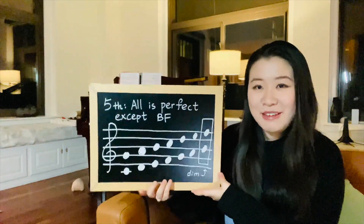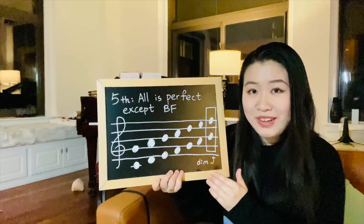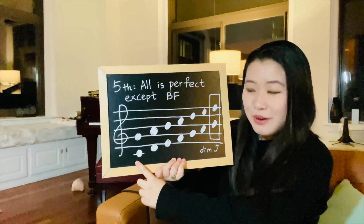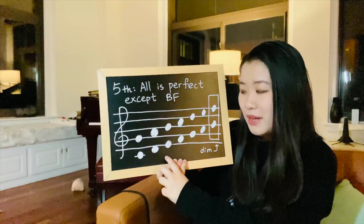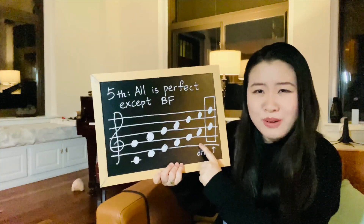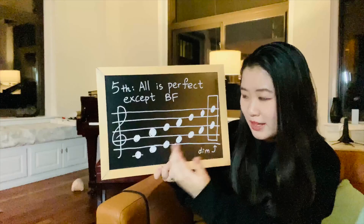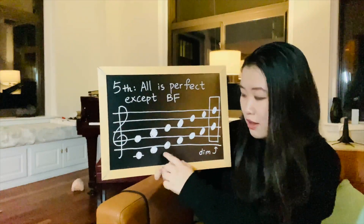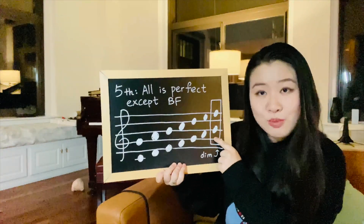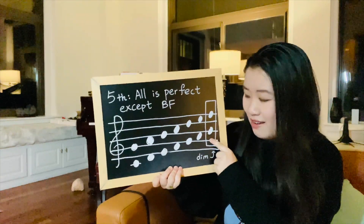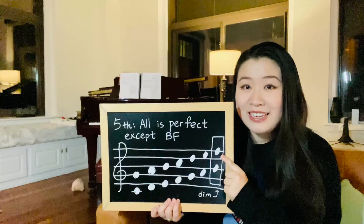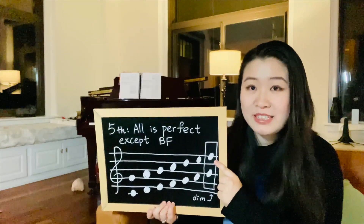For fifths, it's the same thing — all white key fifths are perfect, unless you have a B and an F. C to G — perfect. D to A — perfect. E to B — perfect. F to C — perfect. G to D — perfect. A to E — perfect. You don't even have to think about these — they're not a B and an F, they're a fifth, they're perfect. B to F is our only exception — a B to an F is a diminished fifth. This rule is a game changer; it makes it so much easier.